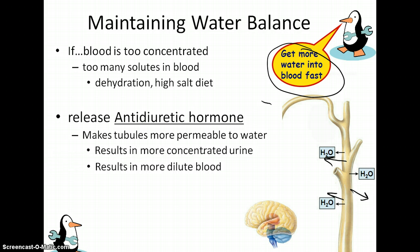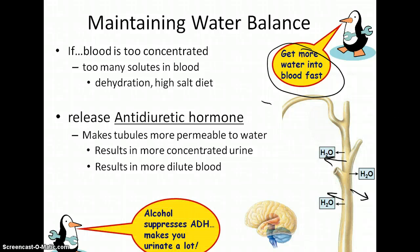In doing so, your urine becomes much more concentrated but your blood becomes much more dilute. An anti-diuretic does the opposite of a diuretic — alcohol is a diuretic. Alcohol suppresses ADH, so you urinate much more frequently when drinking.